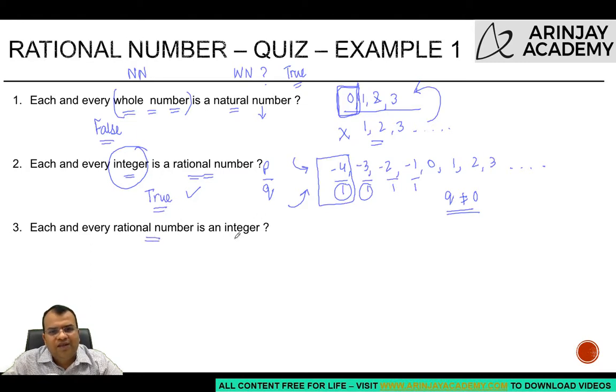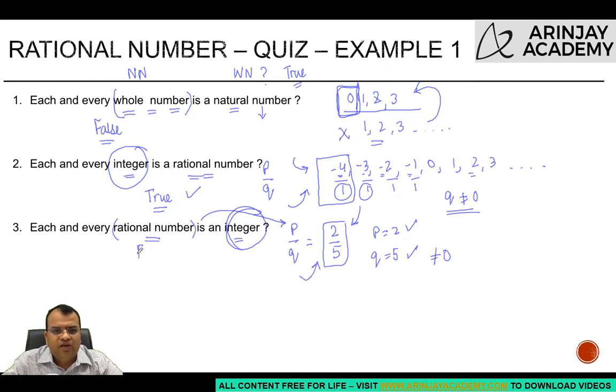Each and every rational number is an integer. Now rational numbers, let's say 2 upon 5. Is 2 upon 5 a rational number? If I compare this with p upon q, the value of p is 2, the value of q is 5. This is an integer, this is an integer, and q is not equal to zero. Which means 2 upon 5 is a rational number. But is 2 upon 5 an integer? Integers are only whole numbers, whether negative or positive. But rational numbers are not necessarily all integers. Therefore the statement is false.